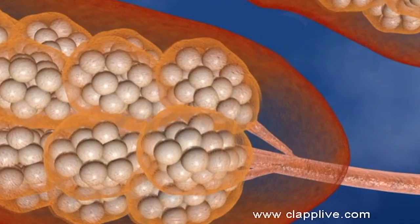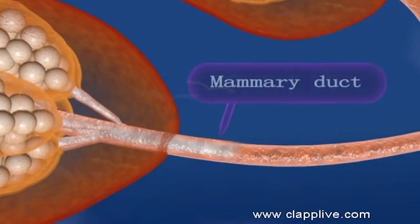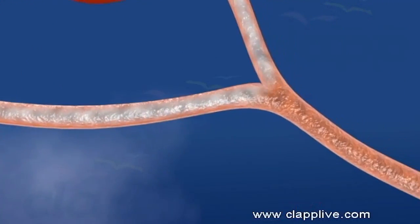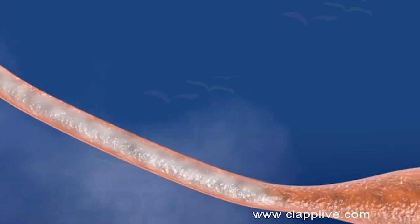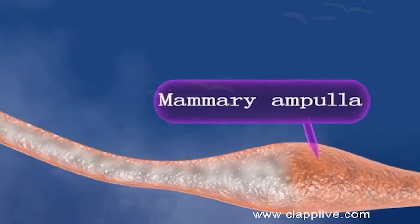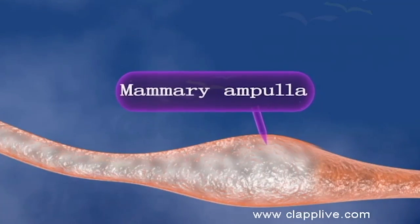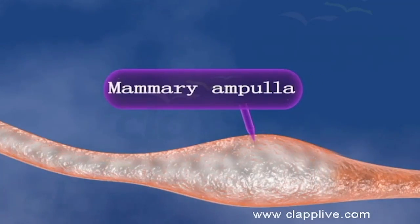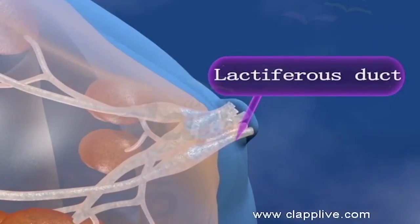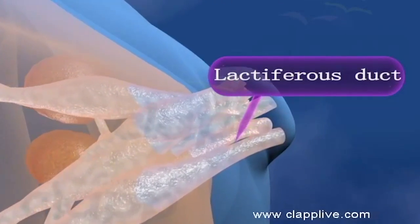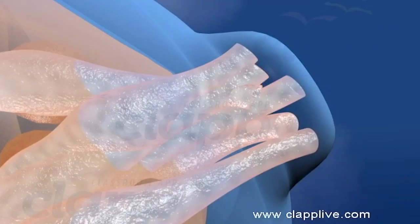Each lobule is composed of grape-like clusters of milk-secreting glands termed alveoli. When a baby sucks the nipple, milk is produced in the alveoli. Milk passes from the alveoli into the mammary tubules and then into the mammary ducts. Several mammary ducts join to form a wider part called the mammary ampulla, and then lactiferous sinuses where milk may be stored before going to the lactiferous ducts. Each lactiferous duct carries milk to the nipple. The ejection of milk is stimulated by the hormone oxytocin, and a nursing woman can secrete one to two liters of milk per day.